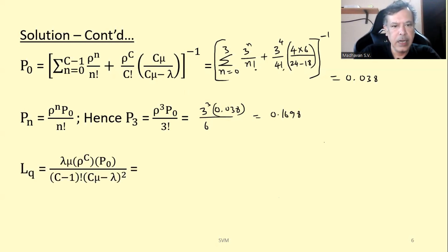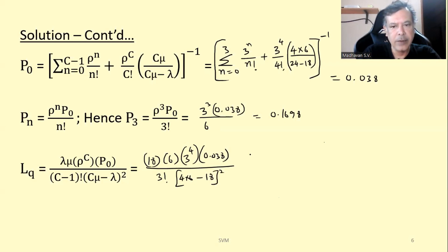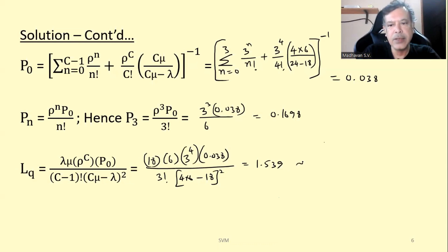Then we calculate L_q. With lambda equals 18, mu equals 6, rho to the power 4 is 3 to the power 4, times P0 equals 0.038. The whole thing is divided by (C minus 1) factorial, which is 3 factorial, times (C·mu minus lambda) squared, which is (4 times 6 minus 18) squared, that is (24 minus 18) squared equals 36. Evaluating this, we get L_q equals 1.539, which can be rounded to 2 vehicles.